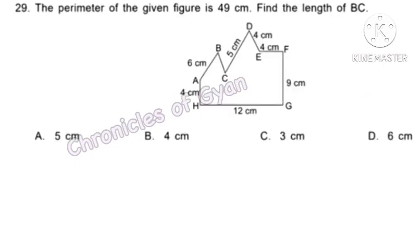Question 29. The perimeter of the given figure is 49 cm. Find the length of BC. Adding the given lengths: 4 plus 6 is 10, plus 5 is 15, plus 4 is 19, plus 4 is 23, plus 9 is 32, plus 12 is 44. Length of BC equals perimeter minus known sides: 49 minus 44 equals 5 cm — option A.